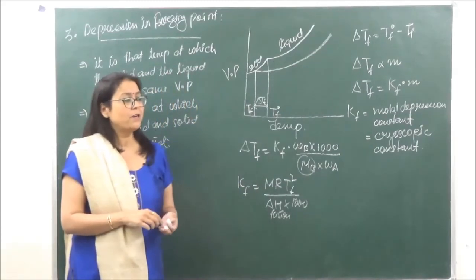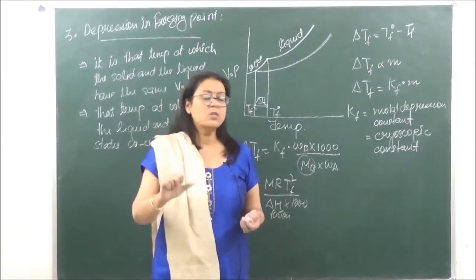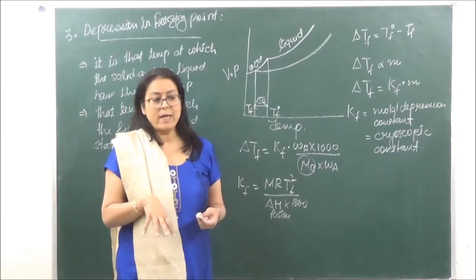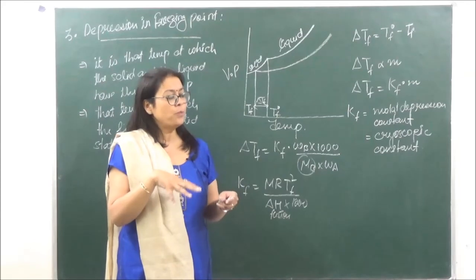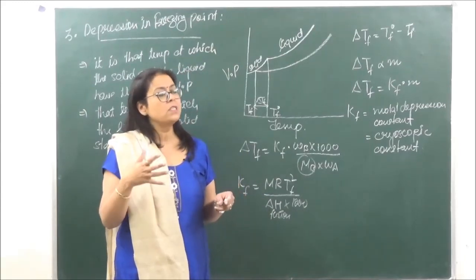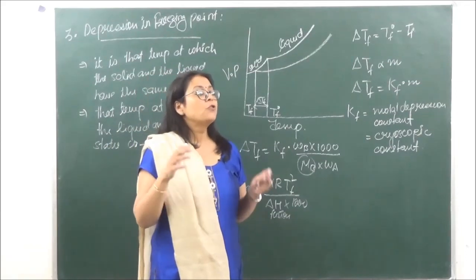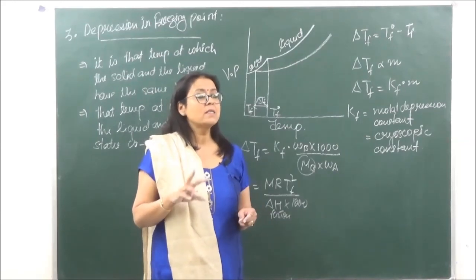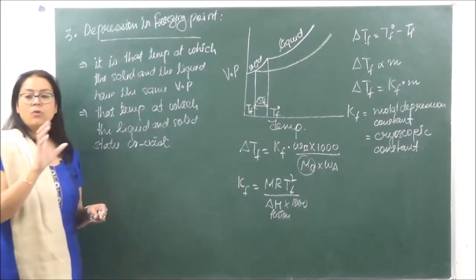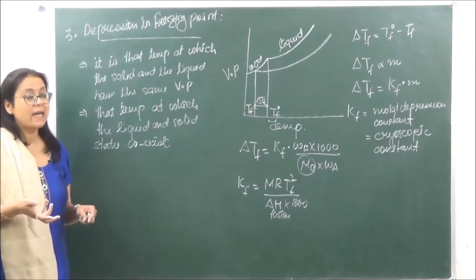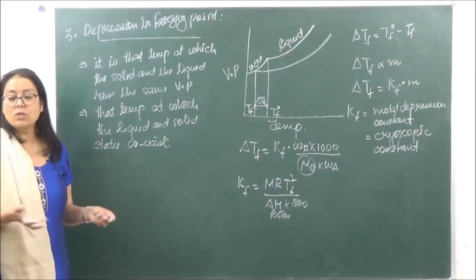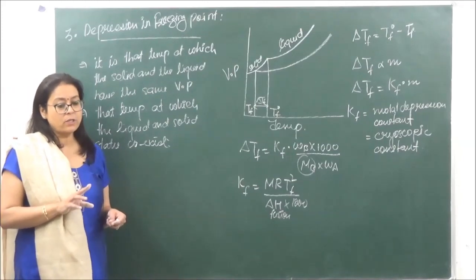Another practical application: in winters, roads in hilly areas get ice. A mixture of sodium chloride and calcium chloride (both non-volatile solutes) is spread on the roads. This lowers the freezing point of water, so water on the road does not freeze even below 0°C. These are two practical significances of depression in freezing point, and can come as reasoning questions worth one mark each.